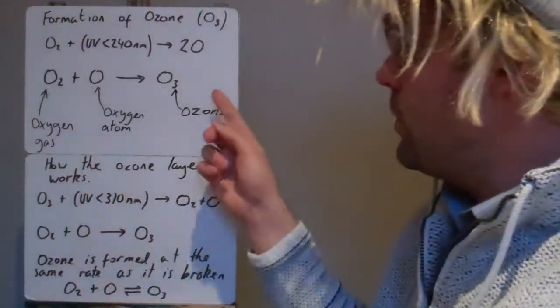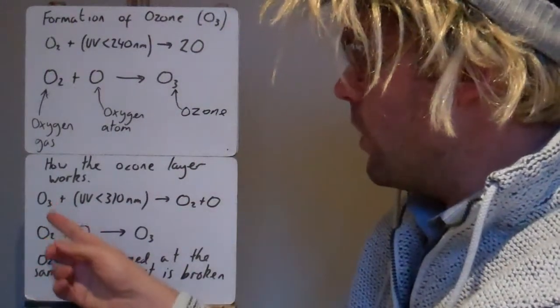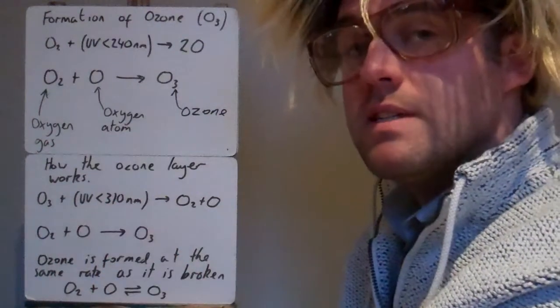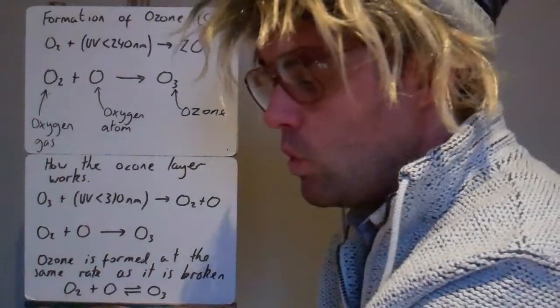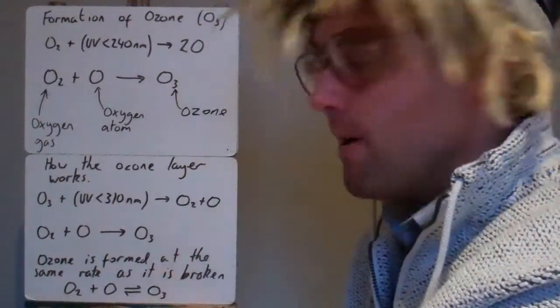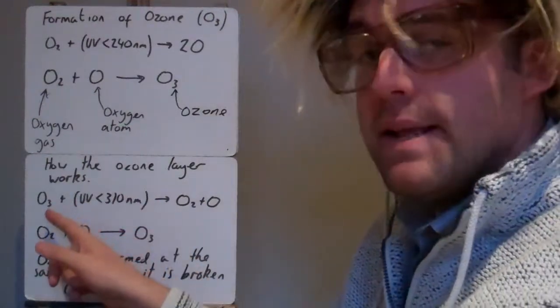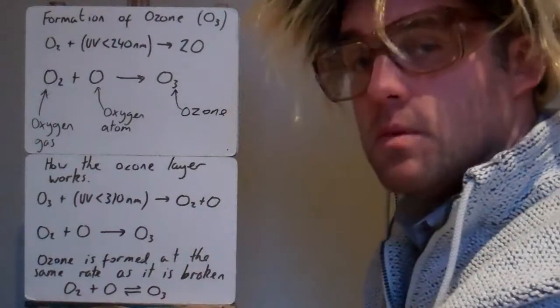So we produce the ozone that forms the ozone layer. So what does the ozone layer do? Well this ozone reacts with the UV with wavelengths less than 310 nanometers. So sort of between that 240 and that 310, what we called the UV-B area. What it does, it's high energy again, splits the ozone molecule up into an oxygen molecule and an oxygen atom.